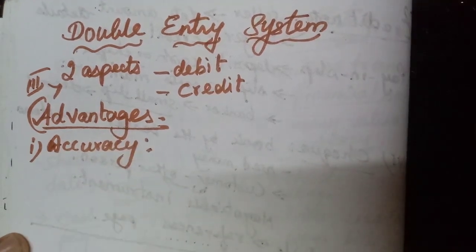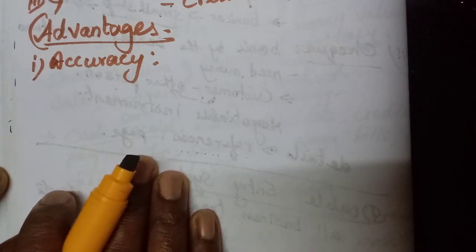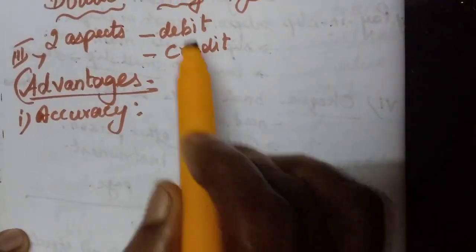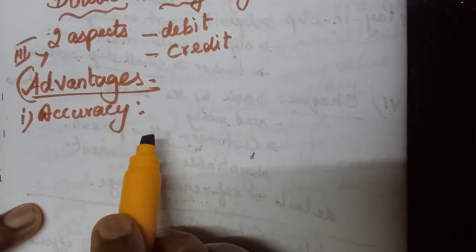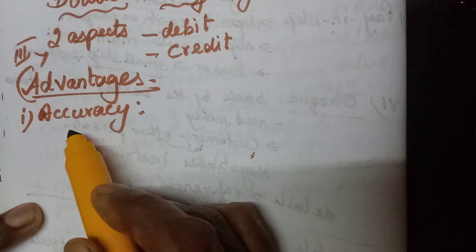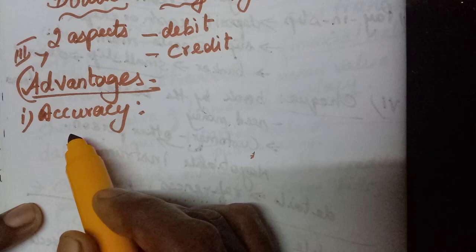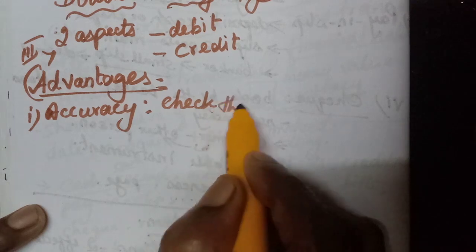Accuracy: the amount mentioned in the double entry system will be accurate because we can check the accuracy of accounting — each debit amount must be equal to the credit amount. If there is any difference, we can say that there is some mistake. So the first advantage is that since we enter both aspects of a transaction, we can check the accuracy of accounting.